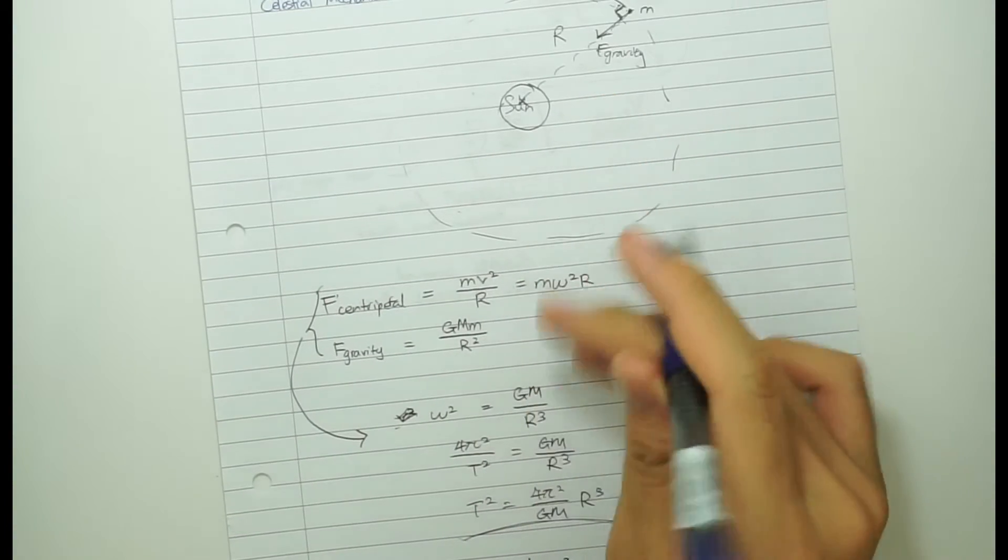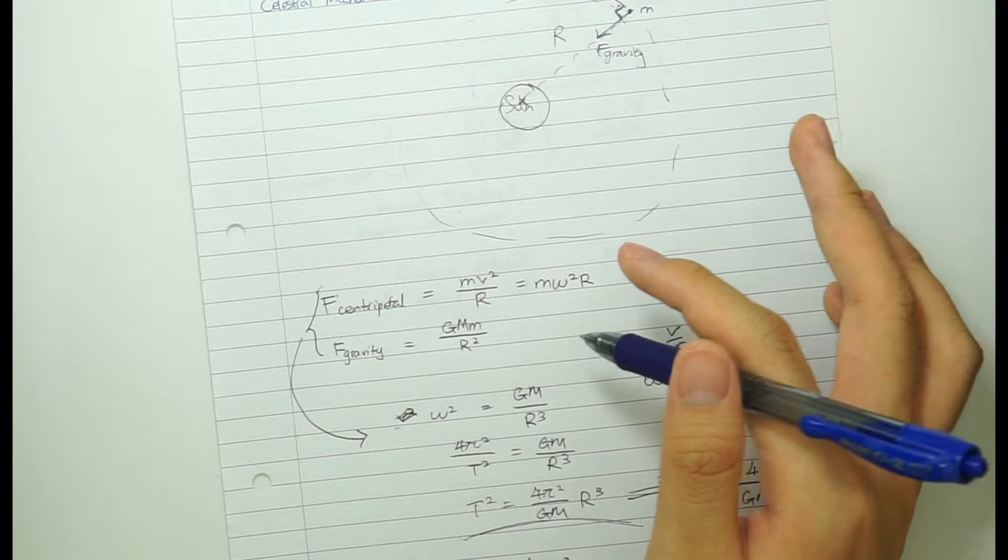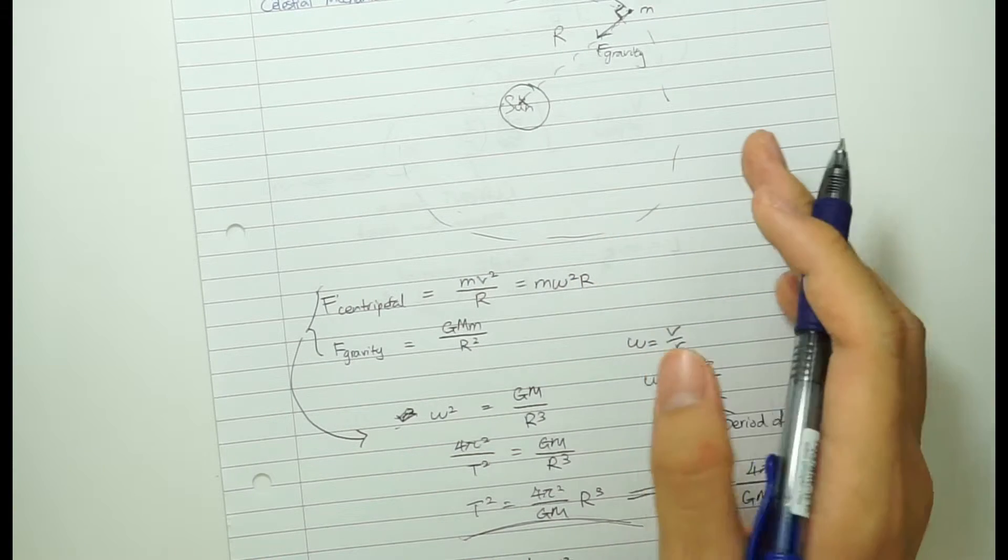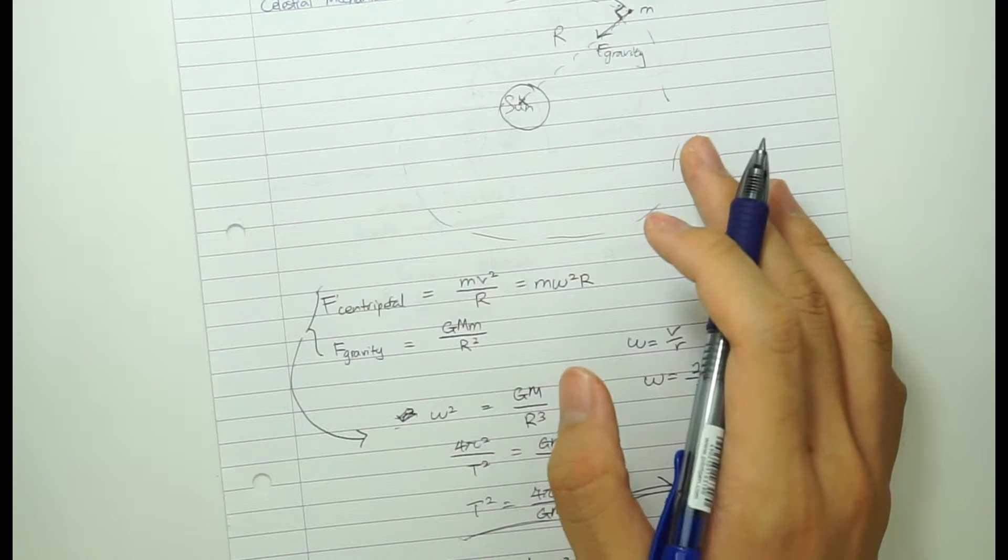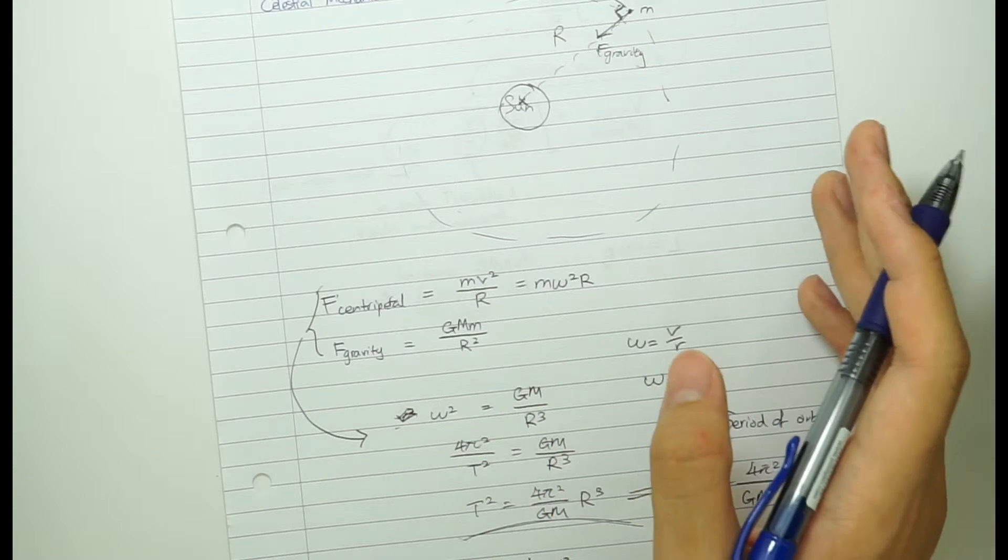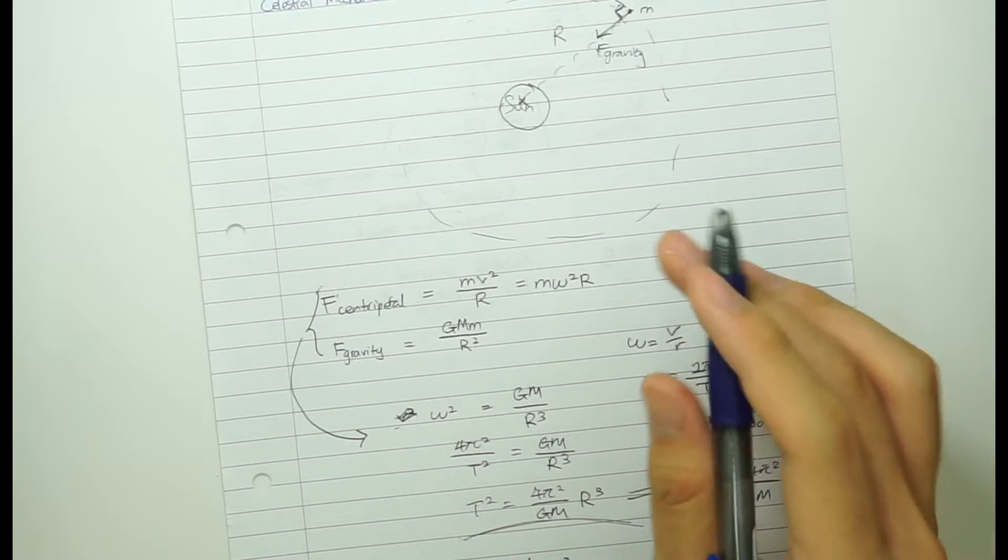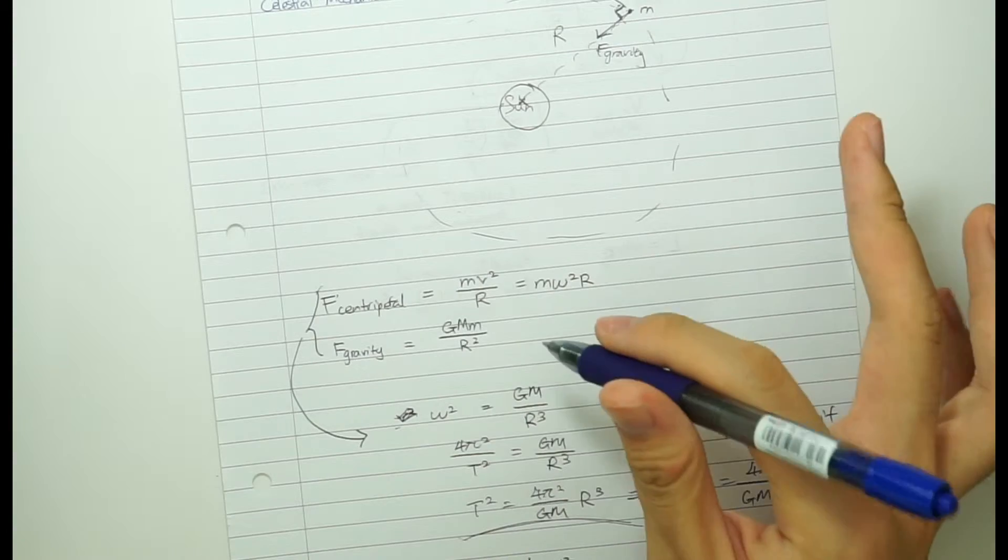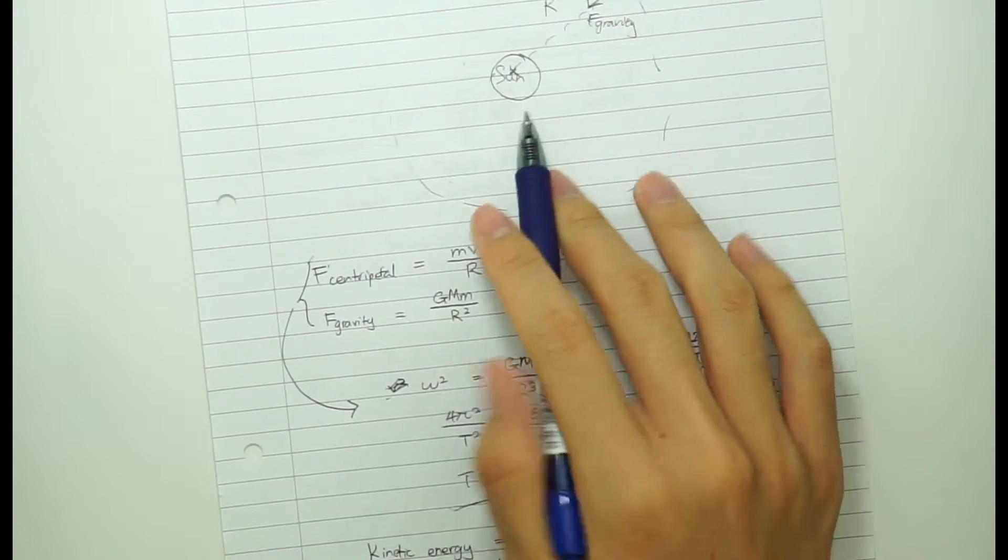So basically I'm going through celestial mechanics and I'm going to do it from the problem solving point of view. So if you think that you don't really understand the concepts behind this, it's better that you go find a YouTube video that already explained this quite well. I'm just going to use this in the context of astronomy and astrophysics problems.